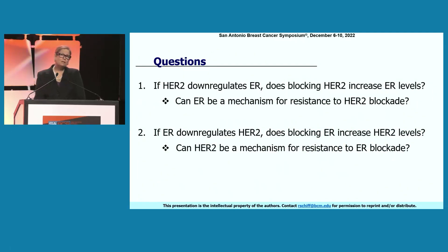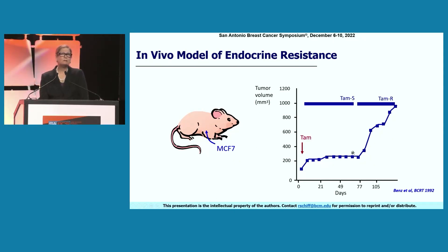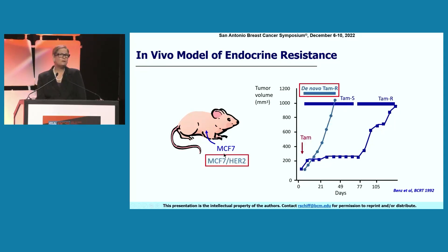The main questions we asked are: if HER2 downregulates ER, does blocking HER2 increase ER levels, and can ER then be the mechanism for resistance to HER2 blockade? Conversely, if ER downregulates HER2, does blocking ER increase HER2 levels, and can those increased levels drive resistance to ER blockade? Using multiple preclinical models, we showed that ER-positive MCF7 breast cancer cells overexpressing HER2 are de novo resistant to tamoxifen, are stimulated by tamoxifen, and only transiently inhibited by estrogen deprivation.